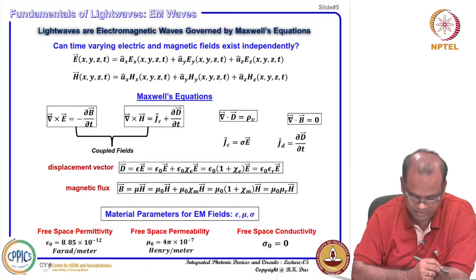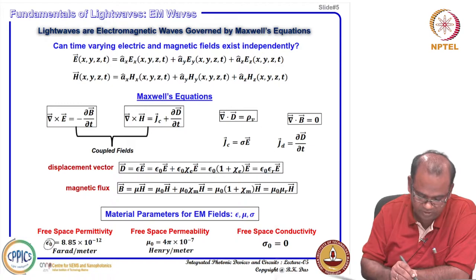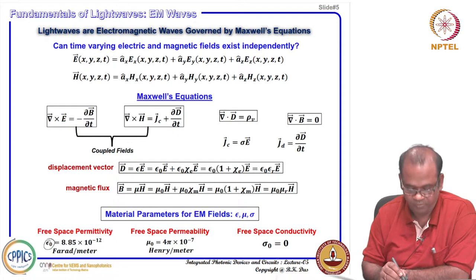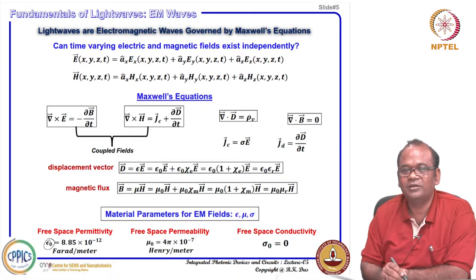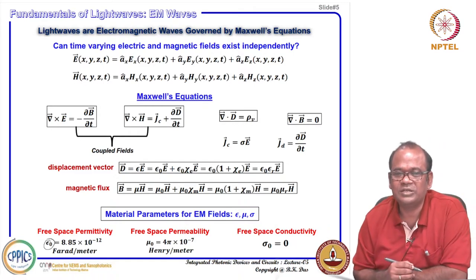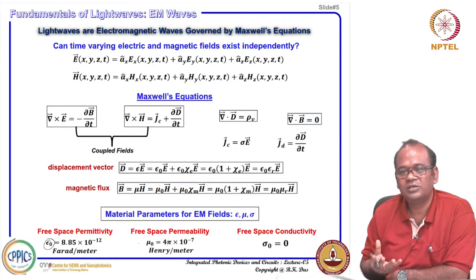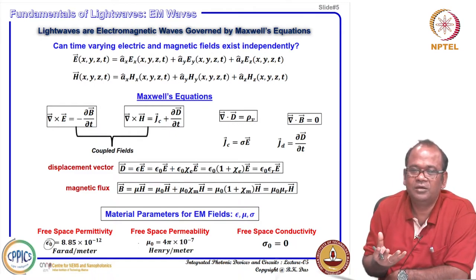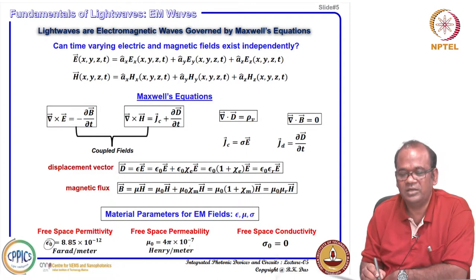Similar to the electric case, we can define a magnetic susceptibility chi-m, and (1 plus chi-m) is called mu-r, the relative permeability. So mu equals mu-zero times mu-r. Do not confuse permittivity and permeability: permeability is related to the magnetic field and permittivity is related to the electric field. In another interpretation, permittivity characterizes the medium in terms of distributed capacitance and permeability in terms of distributed inductance.